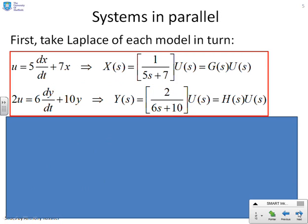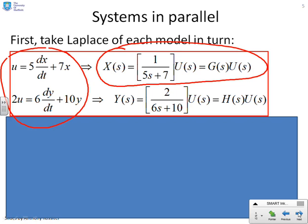Here I've written down the two equations again. The top line, we're going to find out what's the transfer function representation for this model. So U equals 5 dx/dt plus 7x gets transferred into X(s) equals G(s)U(s), where G is 1 over 5s plus 7.